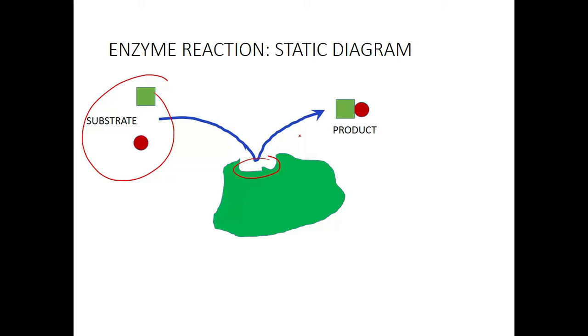But this is kind of what might happen inside your cells. The product is produced, and this enzyme just stays put, nothing really happens to it. If it finds more substrate, it could catalyze another reaction.